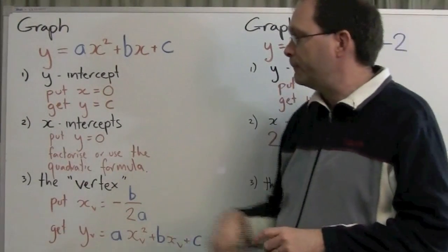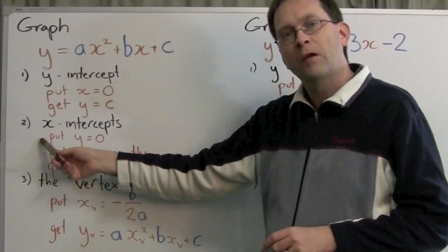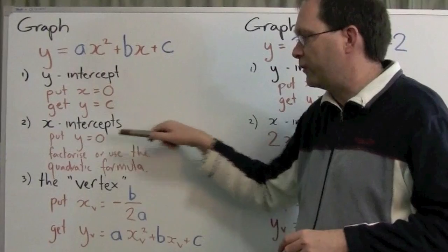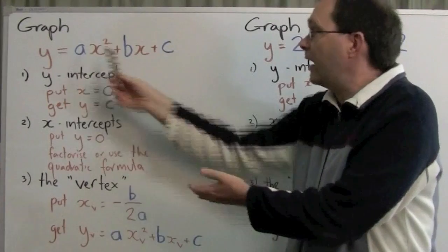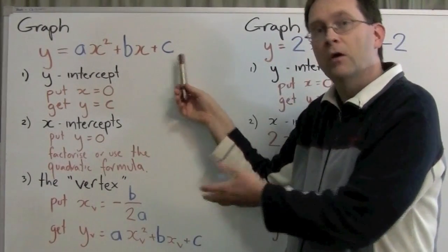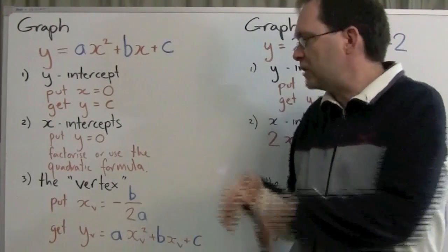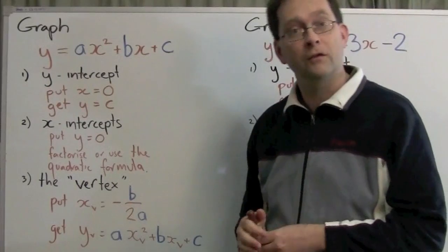The x-intercepts, they're a bit more complicated. For that, you put y equals 0, and then you either factorize this equation, or you use the quadratic formula, which I won't write up here. I'm not going to use it.